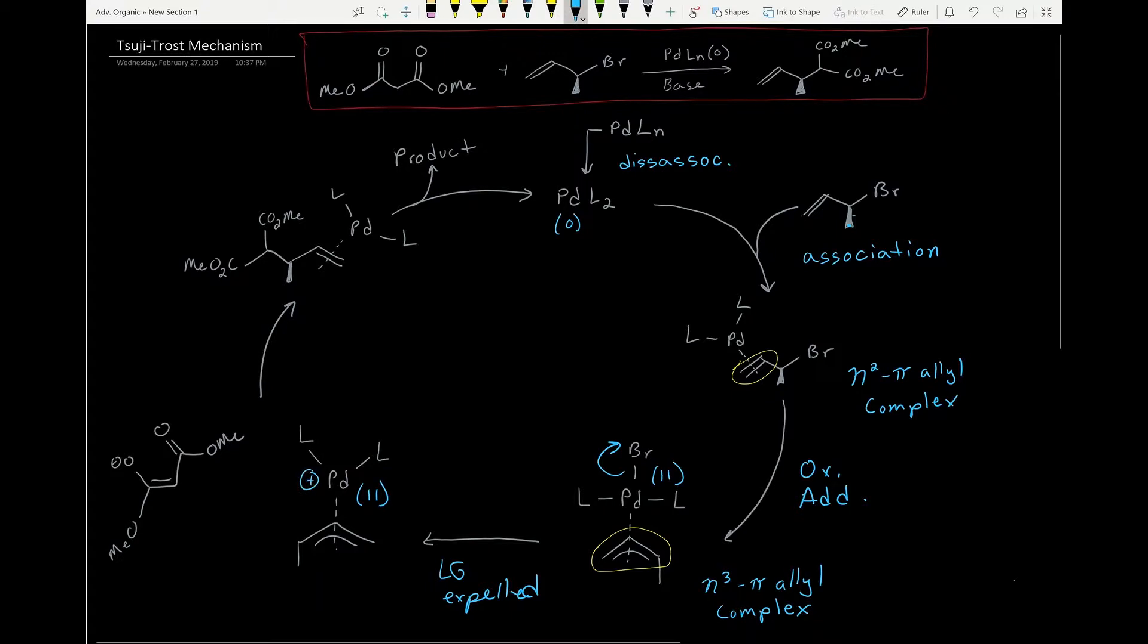Here's where our nucleophile comes in. It's in base, so it's formed the enolate. This swings down. We attack at the carbon where the leaving group was attached, and then the associated minus charge that's involved in this swings up onto the palladium.